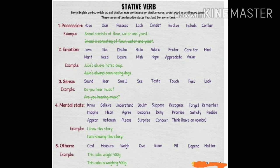Third, verbs of senses: 'Do you hear music?' is correct; 'Are you hearing music?' is wrong. Fourth, mental state verbs: 'I know this story' is correct; 'I am knowing this story' is wrong. Another example: 'This cake weighs 400 grams' is correct; 'This cake is weighing 400 grams' is wrong.